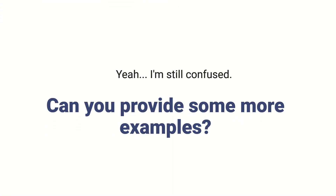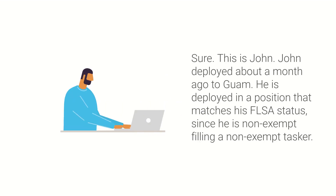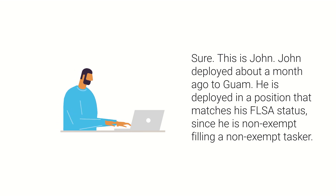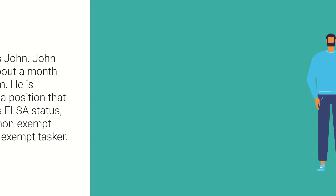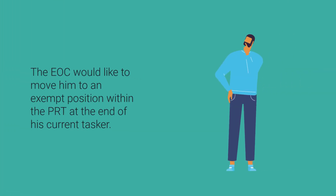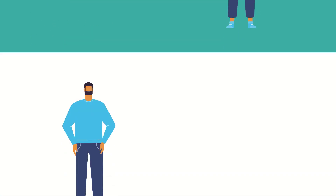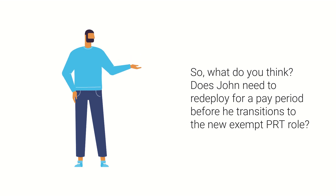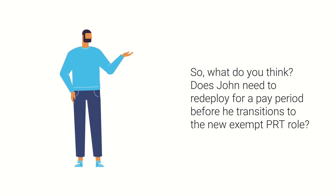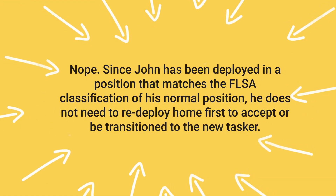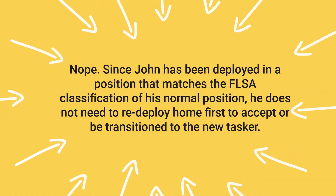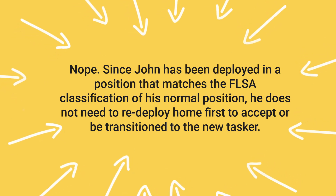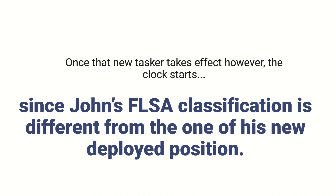I'm still confused. Can you provide some more examples? Sure, this is John. John deployed about a month ago to Guam. He is deployed in a position that matches his FLSA status since he is non-exempt, filling a non-exempt tasker. The EOC would like to move him to an exempt position within the PRT at the end of his current tasker. Does John need to redeploy for a pay period before he transitions to the new exempt PRT role? Nope. Since John has been deployed in a position that matches the FLSA classification of his normal position, he does not need to redeploy home first to accept or be transitioned to the new tasker. Once that new tasker takes effect, however, the clock starts, since John's FLSA classification is now different from the one of his new deployed position.